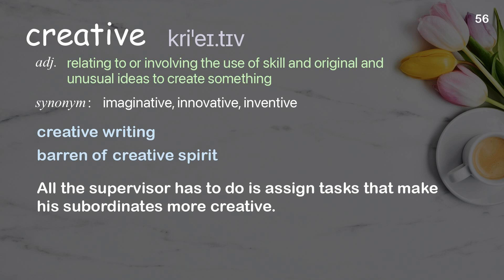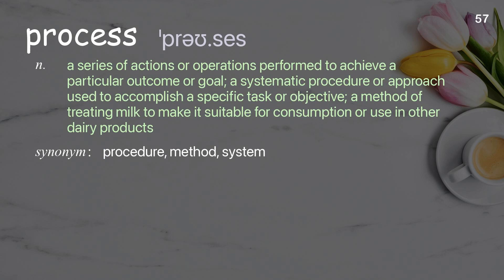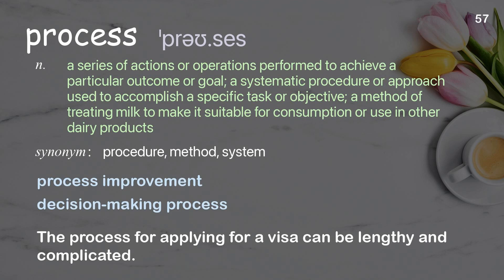Process: a series of actions or operations performed to achieve a particular outcome or goal; a systematic procedure or approach used to accomplish a specific task or objective. Examples: process improvement, decision-making process. The process for applying for a visa can be lengthy and complicated.